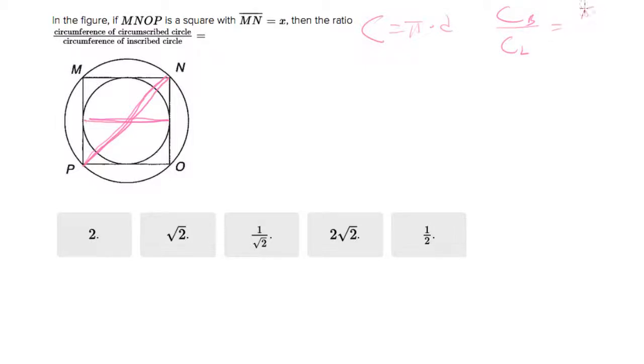It's going to be pi times the - for the big one, it's pi times the diagonal. For the little one, it's pi times the width.